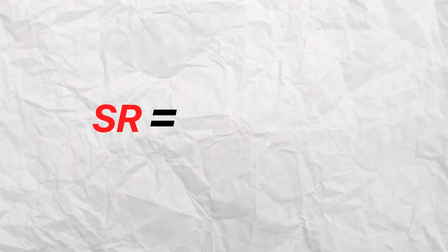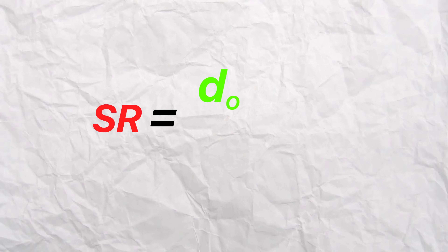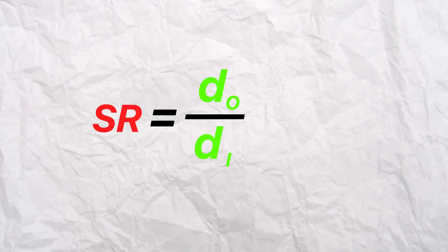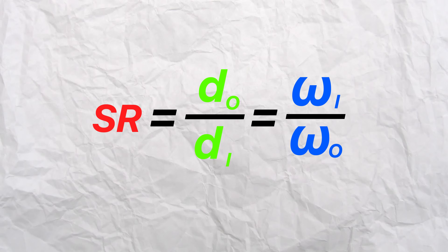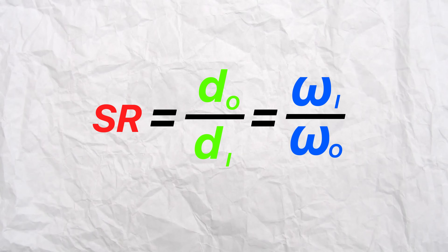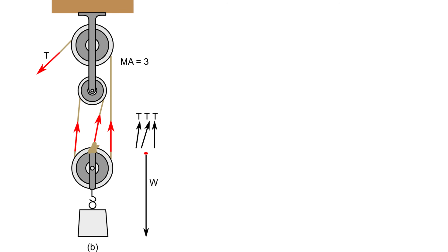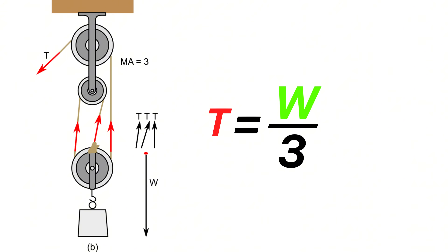Similar to gears, the relationship between pulley diameters defines the speed ratio, which is equal to the diameter of the output pulley over the diameter of the input pulley, or the angular velocity of the input pulley over the angular velocity of the output pulley. The mechanical advantage offered by pulley systems is simply equal to the number of supporting ropes — so for a system with three supporting ropes, the input force required to lift a load is reduced by a third of the load's weight.